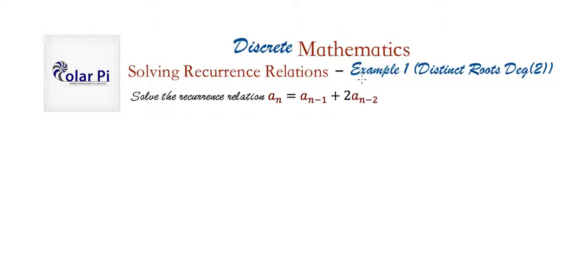Hey guys, welcome. So example 1 here, and in this example we're going to learn how to solve this recurrence relation. This recurrence relation is of degree 2, and it will turn out that the characteristic equation of this recurrence relation will have two distinct roots. And since it's degree 2, the characteristic equation will be quadratic.